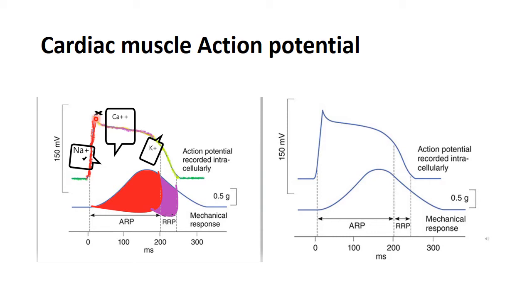Once the sodium activation gate closes completely and the inactivation gate opens, there is a slight dip representing the first phase of repolarization. This dip is due to exit of potassium ions and activation of the sodium-calcium exchanger. The sodium-calcium exchanger plays an important role here. In Phase 0, the voltage-gated sodium channels are activated; then the activation gate closes and the inactivation gate opens and remains closed.